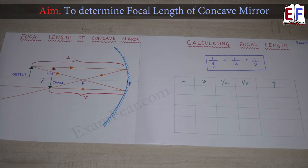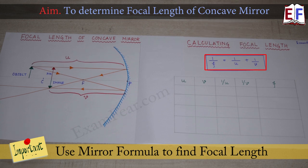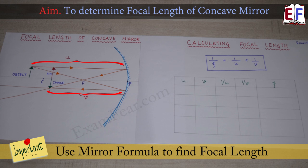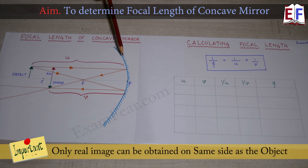We want to determine the focal length of the concave mirror in this activity. For that we will make use of the mirror formula: 1/f = 1/u + 1/v, where u is the object distance and v is the image distance. Since only real images can be captured on a screen, we must ensure that the image formed by this concave mirror is real and inverted.